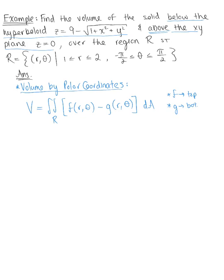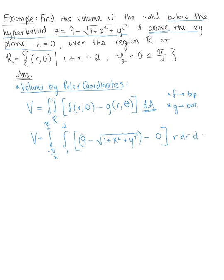We can fill this in: the outer bounds are in θ from negative π/2 to positive π/2, the inner integral bounds are in r from 1 to 2, and our top curve is the hyperboloid — 9 minus the square root of 1 plus x squared plus y squared — minus the bottom curve, which is just 0. And don't forget with polar coordinates the differential is r dr dθ.